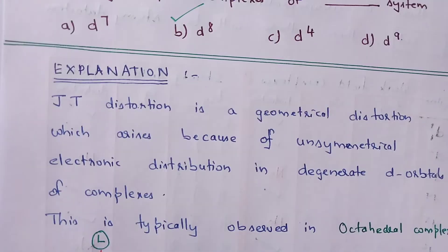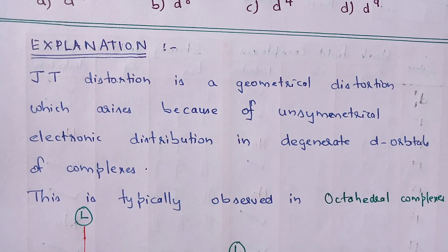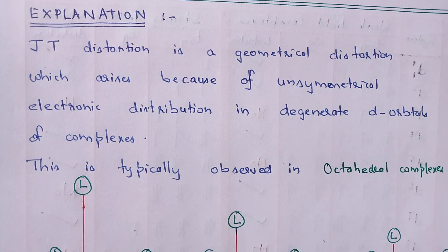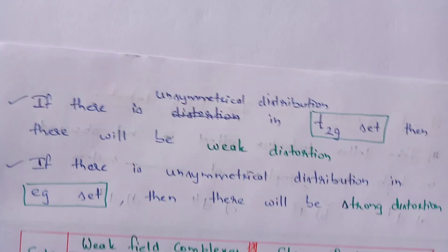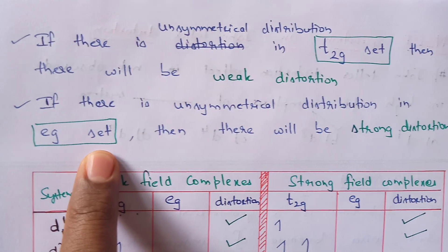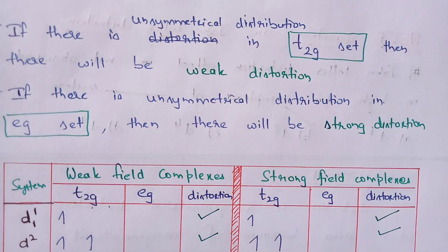So this is about Jahn-Teller distortion. Whenever there is unsymmetrical electronic distribution of electrons in the T2G set or EG set, there will be Jahn-Teller distortion. If the unsymmetrical distribution is present in the EG set, then the distortion will be very high — it is called strong distortion.